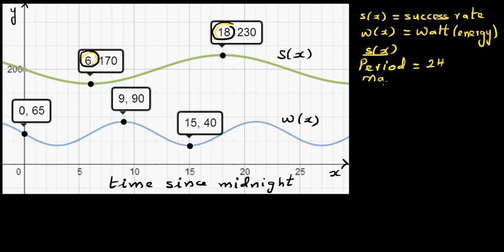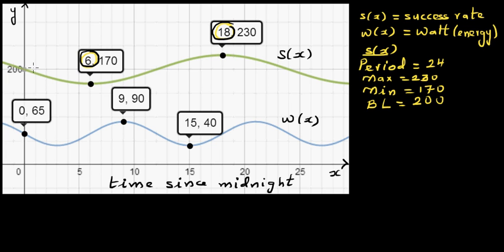The maximum is 230 and the minimum is 170. From these two values you can write the baseline and the amplitude. The baseline is the average of the two, which is 200. If you draw a line through 200 that's the baseline, and the amplitude is the distance from maximum to baseline — so 230 minus 200 — giving an amplitude of 30.